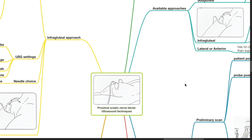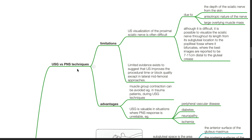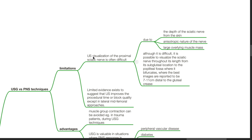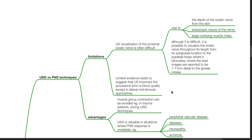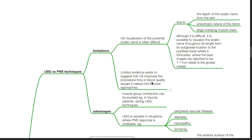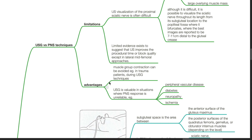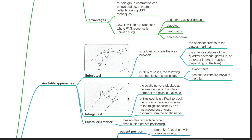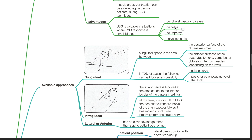Proximal sciatic nerve block — ultrasound techniques. Comparing ultrasound versus peripheral nerve stimulation: limitations of ultrasound include difficulty visualizing the proximal sciatic nerve due to its depth from the skin, anisotropic nature of the nerve, and large overlying muscle mass. Although difficult, it is possible to visualize the sciatic nerve throughout its length; best images are reported 7–11 cm distal to the gluteal crease. Limited evidence suggests ultrasound improves procedural time or block quality, except in lateral mid-femoral approaches. Advantages: muscle group contraction can be avoided (e.g., in trauma patients), and ultrasound is valuable when peripheral nerve stimulation response is unreliable — such as in peripheral vascular disease, diabetes, neuropathy, and nerve ischemia.